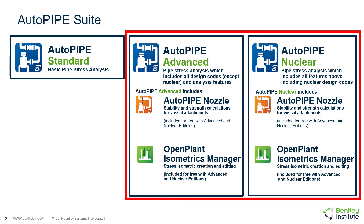The ability to generate stress isometric drawings is available in Autopipe Advanced and Autopipe Nuclear editions. The license for OPIM is included with Autopipe Advanced or Nuclear, but be sure to open OPIM from Autopipe to not be charged for a license of OPIM itself.